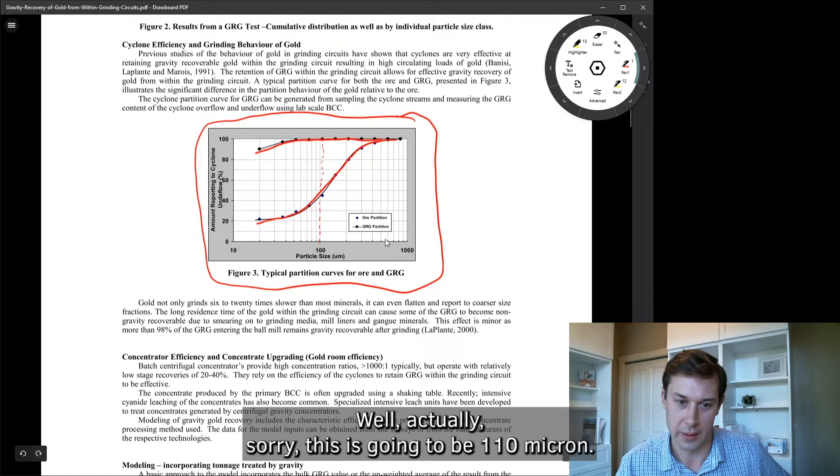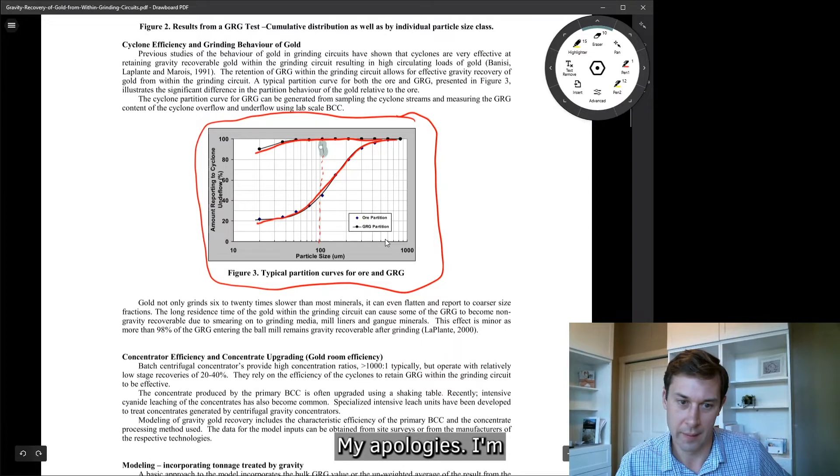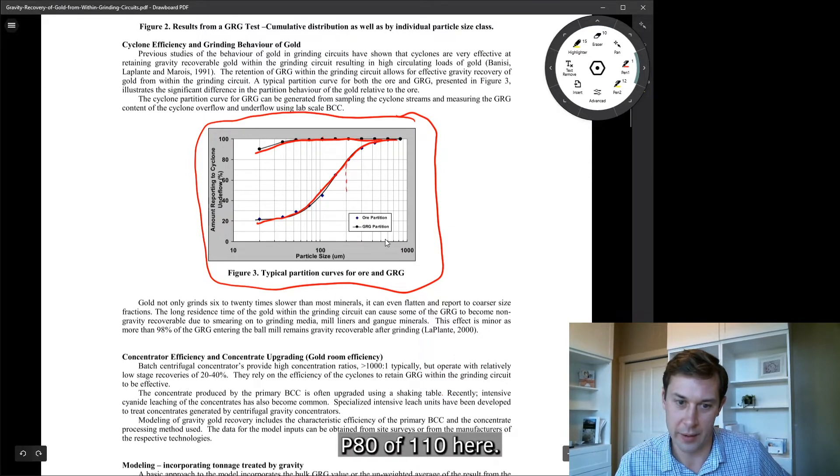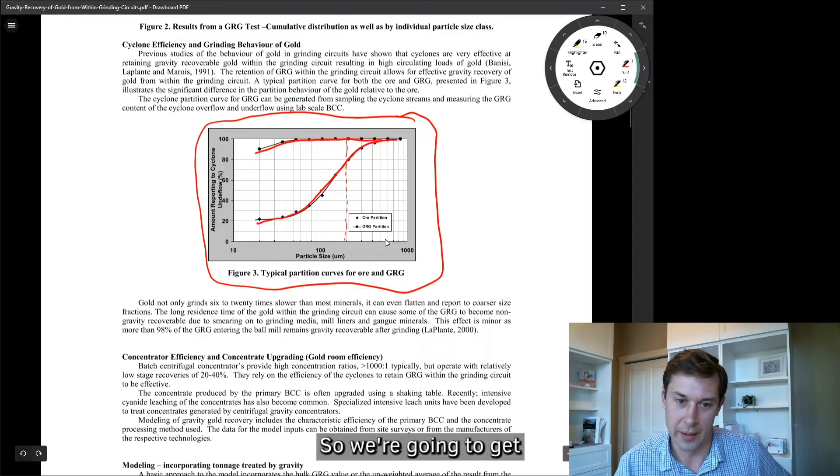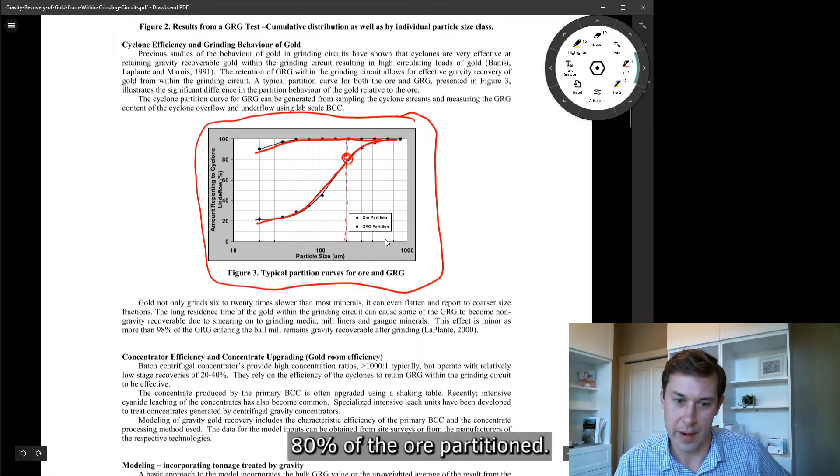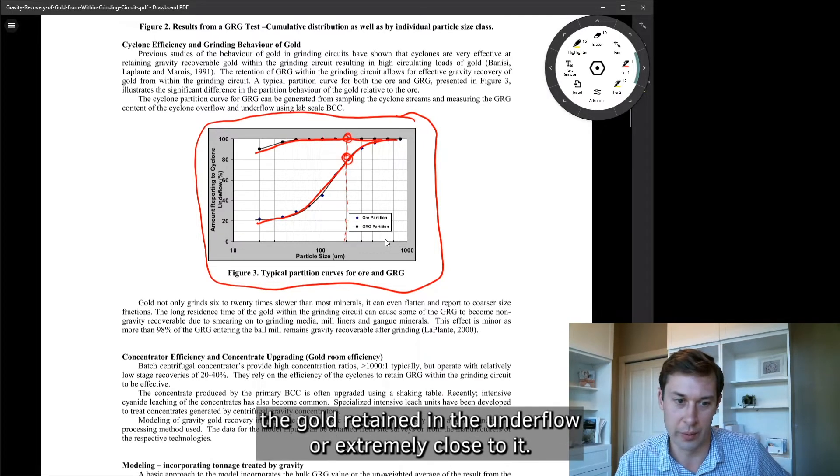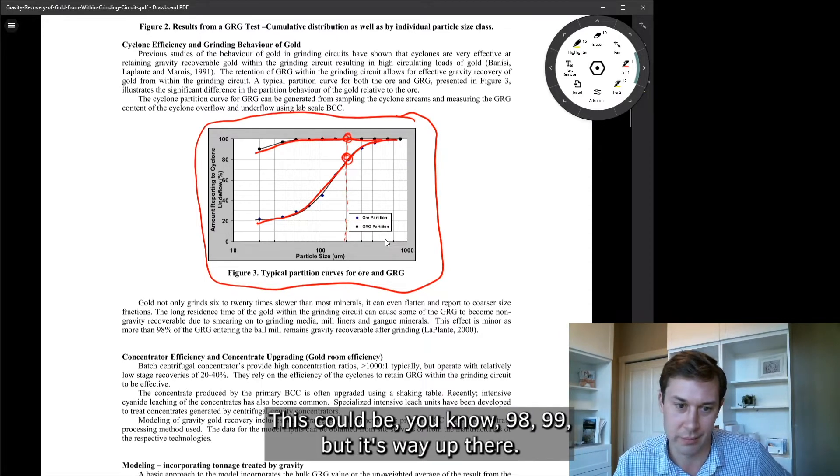Well, actually, sorry, this is going to be 110 micron. My apologies. Sorry, 110 micron, P80 of 110 here. So we're going to get 80% of the ore partitioned, and it looks like in this case, basically 100% of the gold retained in the underflow, you know, extremely close to it. This could be 97, 98, 99, but it's way up there.